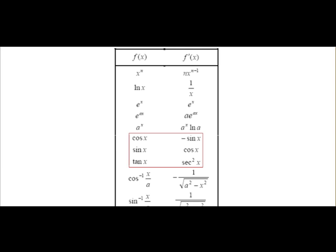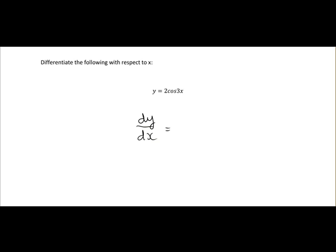This particular question, we're asked to differentiate 2cos(3x). The first thing we need to do is check what cos differentiates to. We can see from our list that cos differentiates to minus sine. So we'll apply that here — cos is going to differentiate to minus sine, giving us 2 times minus sine(3x).